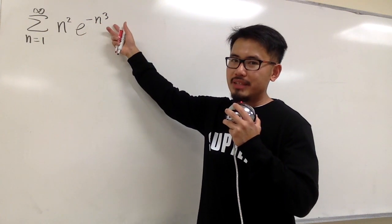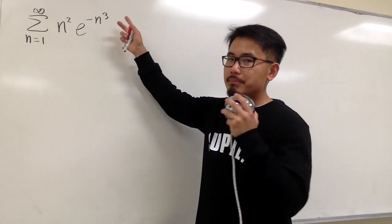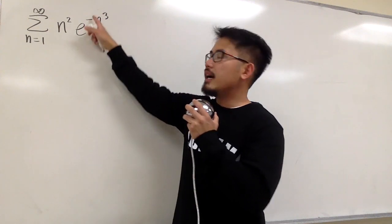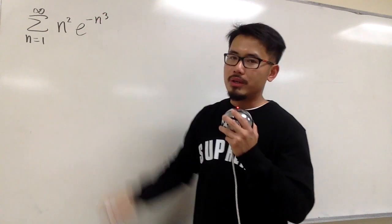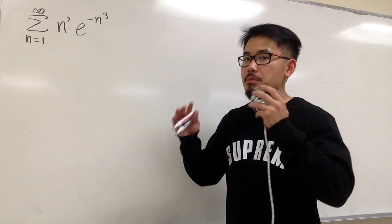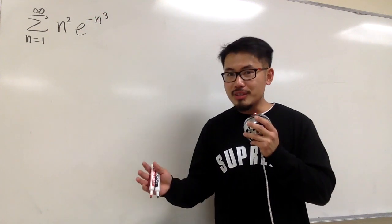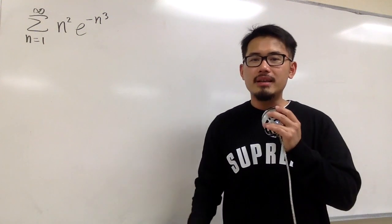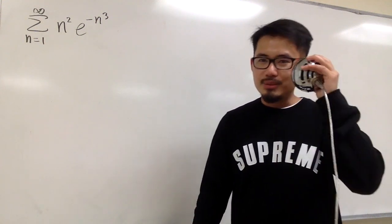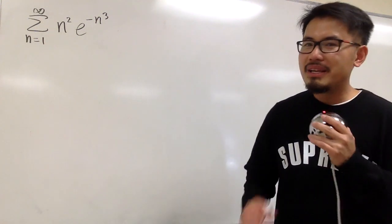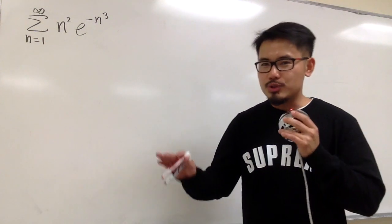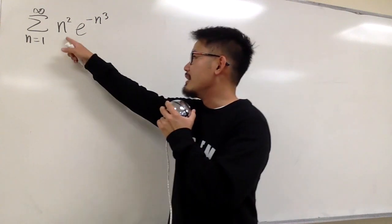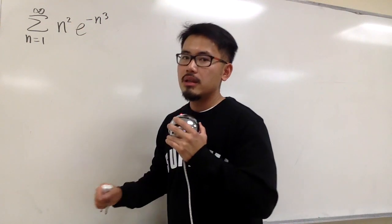As we can see, we do have n in the exponent, but the problem is that we have negative n to the third power. If we want to use the ratio test, we will end up with negative (n+1) to the third power in the parentheses, which gets messy. We also have n squared in front.